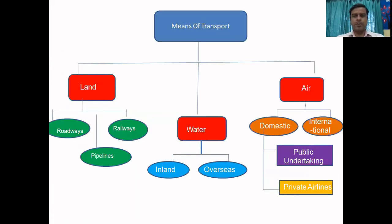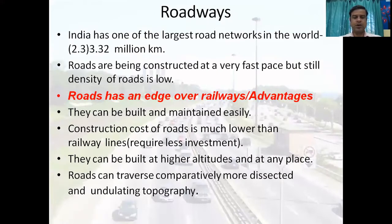The first subtopic is means of transport. Under land, we have railways, roadways, and pipeline. Under water, we have inland and overseas. Under air, we have domestic and international; in domestic we have public and private.